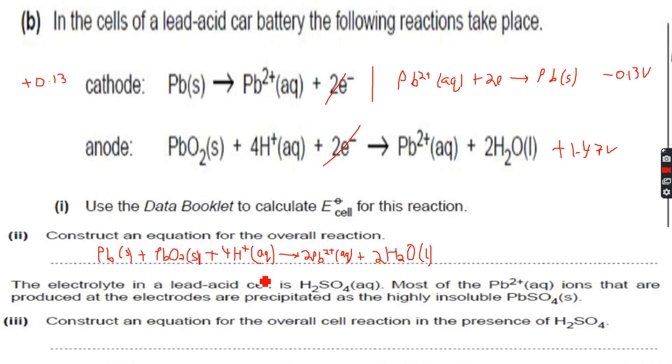So we have constructed an overall equation for the reaction and now we can move forward. The electrolyte in a lead acid cell is H2SO4 aqueous. So now what this is trying to tell us is that the H2SO4 is actually what provides these H plus ions.